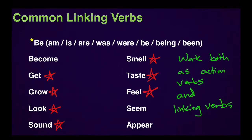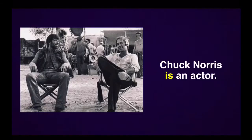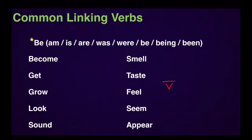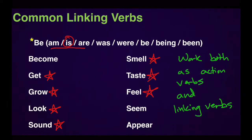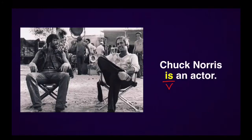You just have to look at the context of the sentence: what kind of information is the sentence giving you? Is the verb talking about an action that the subject is doing? Or is the verb just linking the information after the verb to the subject — is it describing the subject somehow? So in the sentence 'Chuck Norris is an actor,' the verb is is. And remember, is is one of the be verbs — the be verb is always a linking verb. So 'Chuck Norris is an actor' is a linking verb sentence.